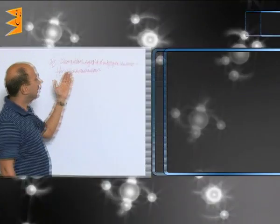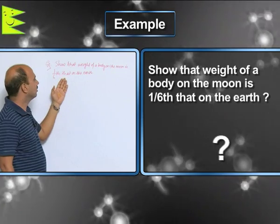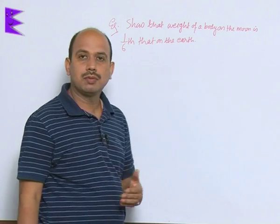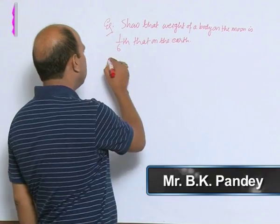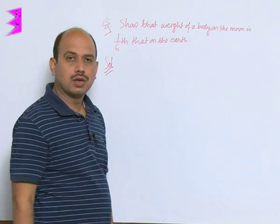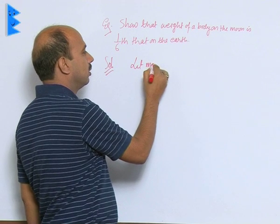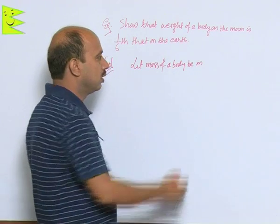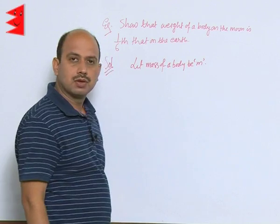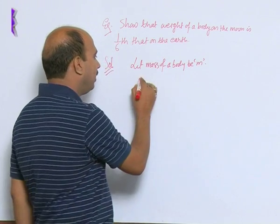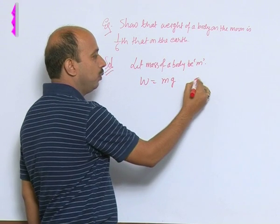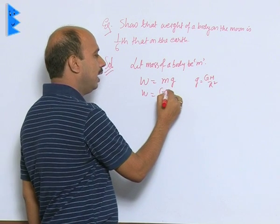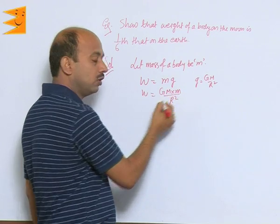In this example, it shows that the weight of a body on the moon is 1/6 that on the earth. It means if you go to the surface of the moon, weight will reduce to 1/6 of that on the earth. To solve this, let mass of a body be M. We know weight is equal to M into G, and G is equal to GM upon R square, so we can write G times mass of planet times mass of body upon R square — that is actually the gravitational force.